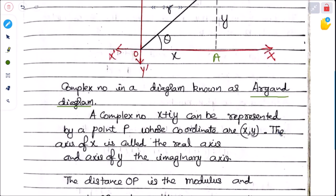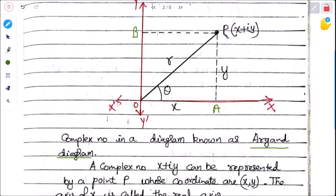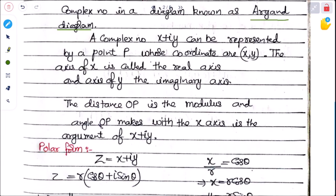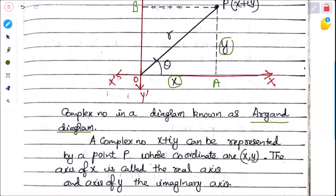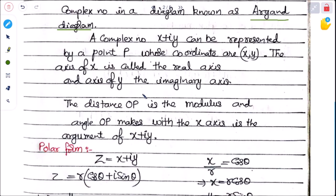The complex number x + iy can be represented by a point P whose coordinates are x and y. The x-axis is called the real axis and the y-axis is called the imaginary axis. The distance OP is the modulus, and the angle OP makes with the x-axis is the argument of x + iy.